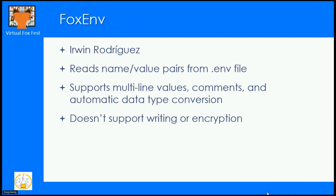FoxNv is created by Erwin Rodriguez. It reads name-value pairs from an ENV file. The idea is that if you have a bunch of settings you want to use in your application, when you read those settings they're created as properties of an object, so they're easy to address in object-oriented syntax. It supports multi-line values, comments, and automatic data type conversion — numeric values become numeric, and values stored as text are automatically converted to date or numeric. It doesn't support writing to the ENV file or encryption, so you're responsible for generating and encrypting the ENV file yourself.